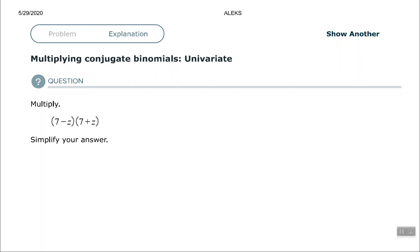Hey, good people. Arthur Morris here. Hope all is well. In this video, we're going to look at multiplying conjugate binomials univariate. So conjugate meaning opposite signs, same terms, opposite signs. Univariate, one variable. Binomial, two terms.